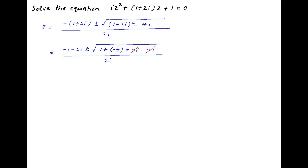4i cancels under the square root in the numerator, and therefore Z is equal to minus 1 minus 2i plus minus i times root 3 divided by 2i.